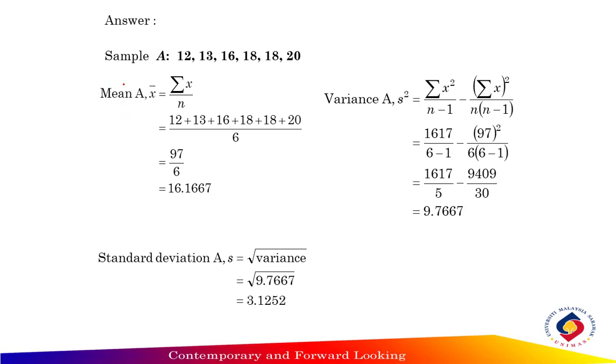The formula to find mean, because this one is raw data, mean equals total of x divided by n. So total of x, the total of 12 until 20, and the number of sample is 1, 2, 3, 4, 5, 6 divided by 6.